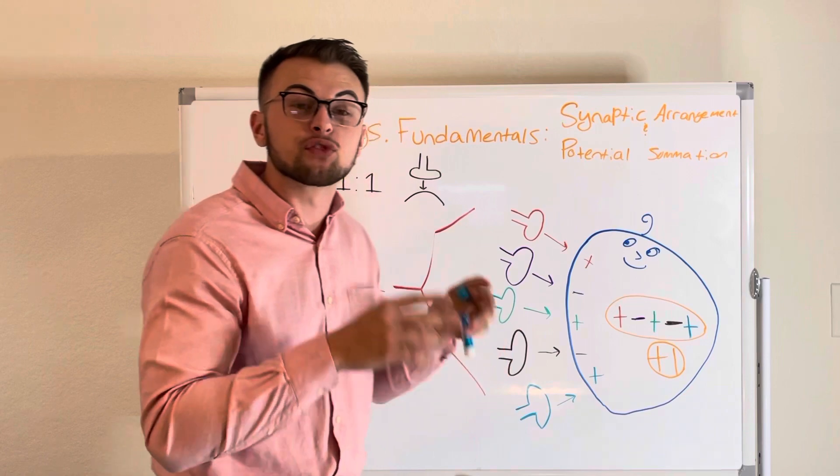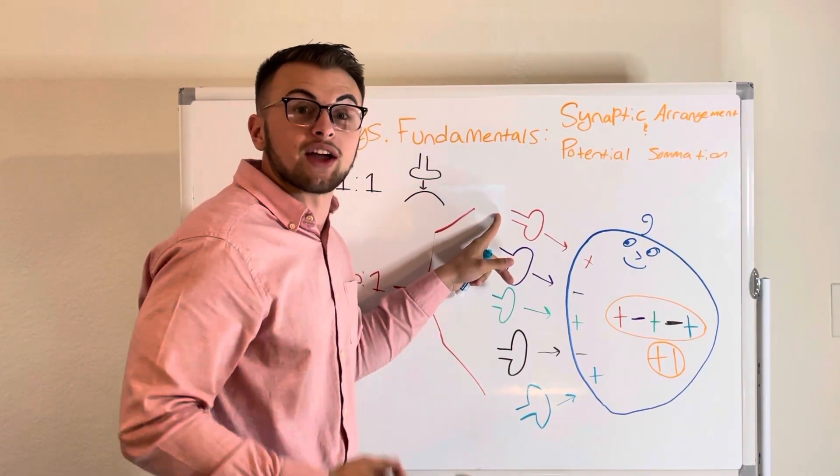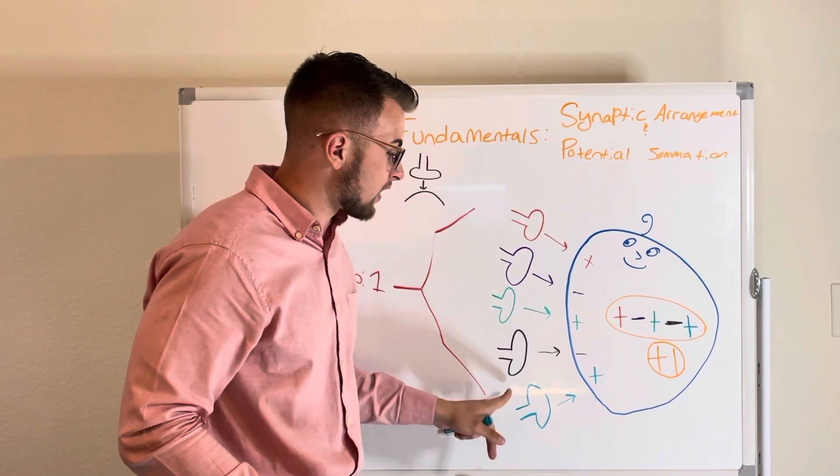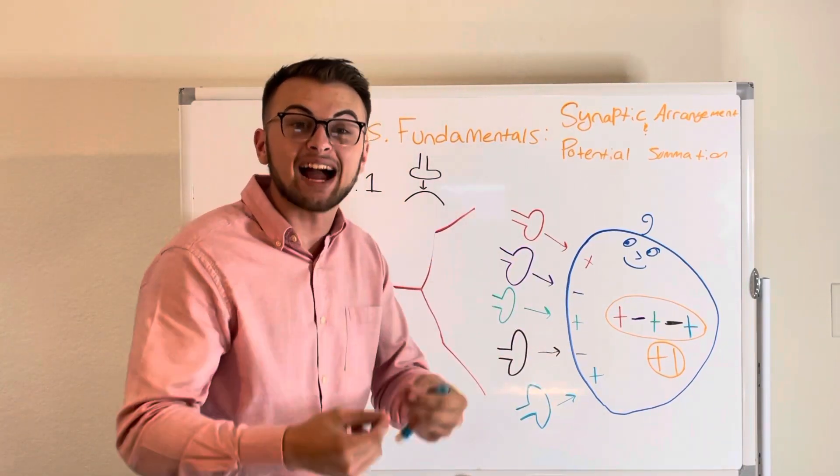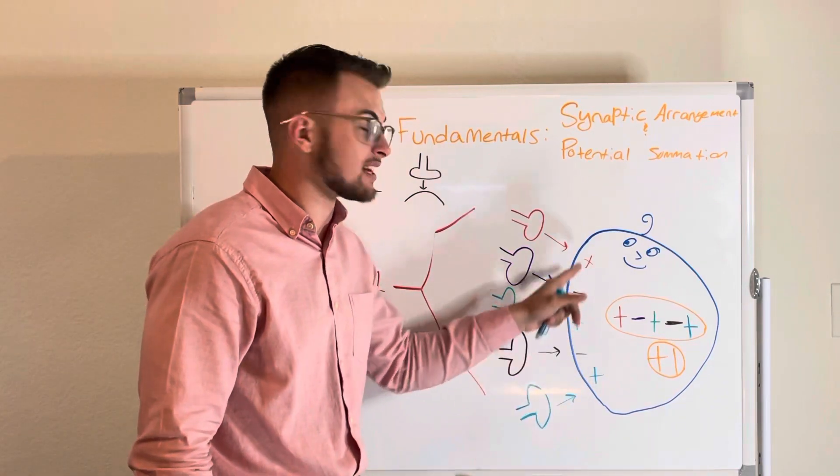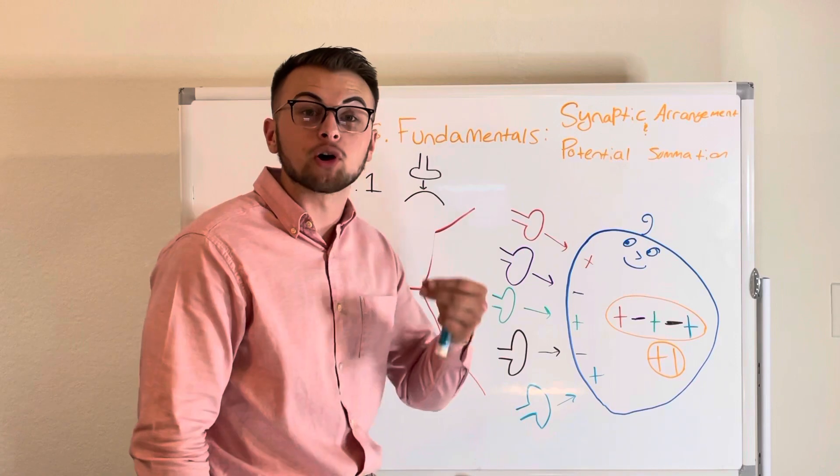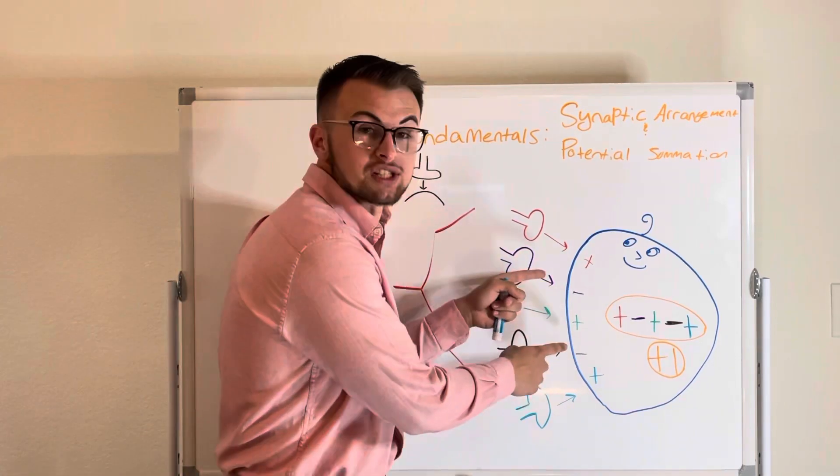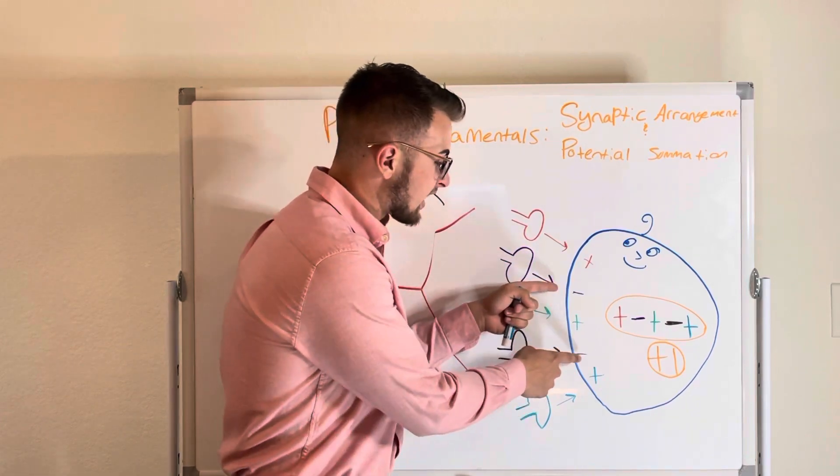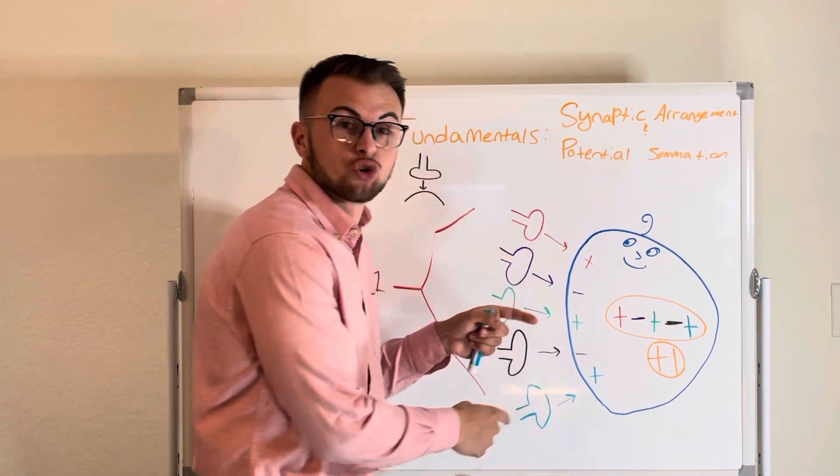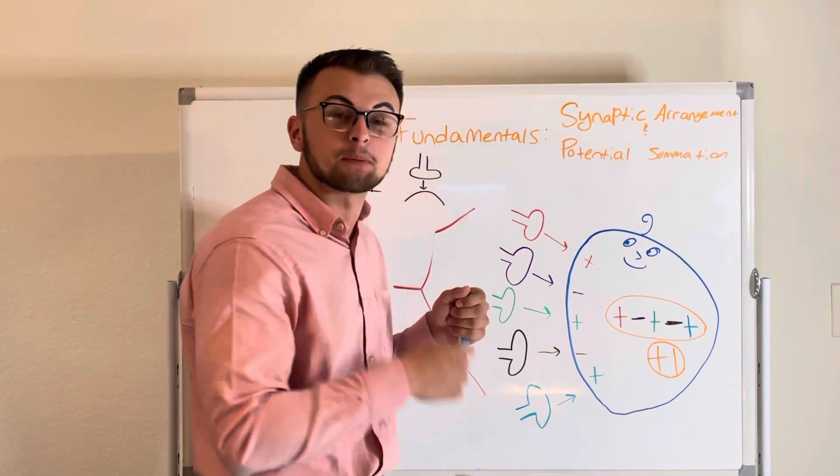Imagine that we have three cells that are releasing a neurotransmitter that causes a positive end-plate potential or excitatory postsynaptic potential. These potentials end up alongside our two cells that are releasing a neurotransmitter that causes a negative end-plate potential or inhibitory postsynaptic potential.